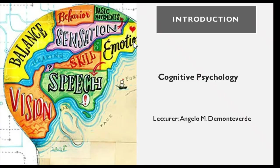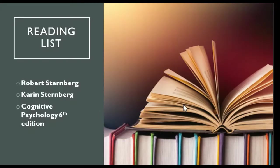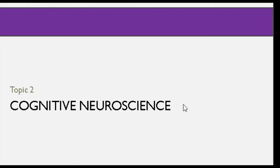Welcome to Cognitive Psychology. I will be your lecturer, Angelo M. de Monteverde. For this lesson, the reading reference we are using is Robert Sternberg and Karen Sternberg, Cognitive Psychology, 6th edition. For this topic number 2, or lesson number 2, we're going to discuss cognitive neuroscience.